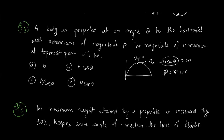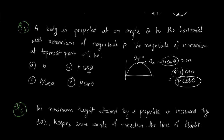So momentum at the topmost point is m·u·cosθ = p·cosθ. The correct answer is option B.